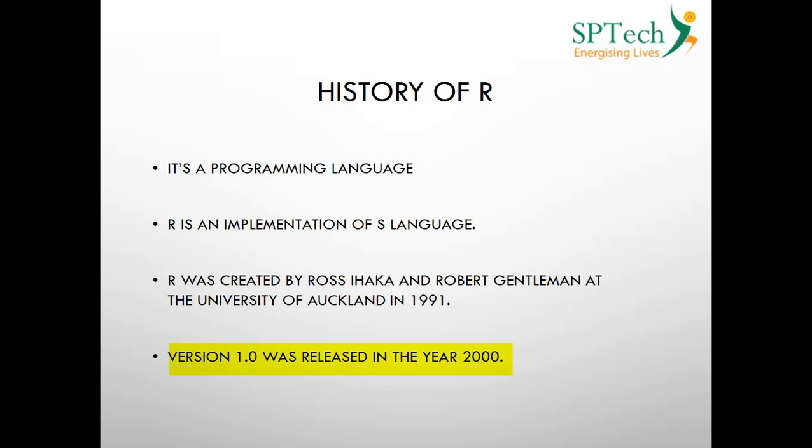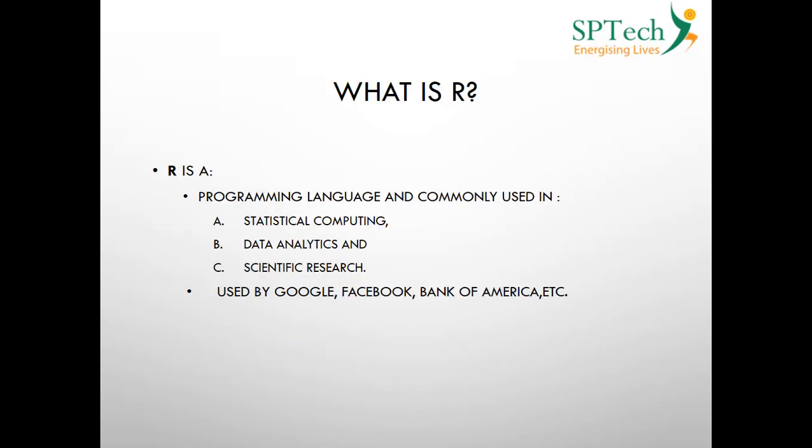R is now a programming language that can be used both for procedural-oriented programming as well as object-oriented programming. That is a brief history of the R language.